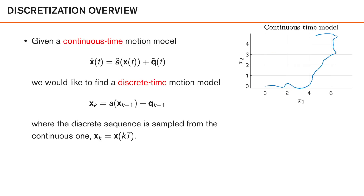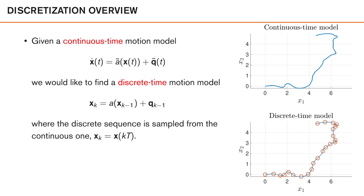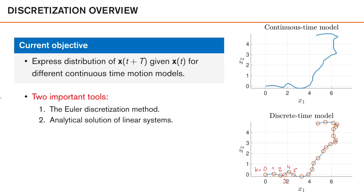We construct our discrete time model by sampling this continuous time model at time 0, T, 2T, 3T, and so on. What we get is a discrete time model expressing our state at discrete time instances k equal to 0, 1, 2, and so on. The objective is to come up with a good motion model expressed in terms of these samples, by expressing the distribution of x at time t plus T given the continuous time sequence at time t. This is the same as expressing the distribution of xk given xk minus 1, which is our discrete time motion model.